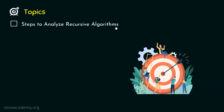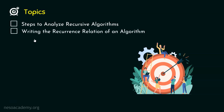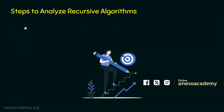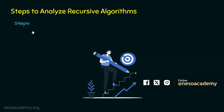We will first learn what are the steps involved in analyzing recursive algorithms, and then we will proceed with writing the recurrence relation of an algorithm. Writing the recurrence relation of a recursive algorithm is important in order to analyze them. Let's get started with the first topic: Steps to Analyze Recursive Algorithms. Here are the steps involved — step number one is to write the recurrence relation of the algorithm.